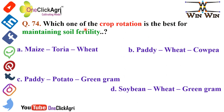Question 74: Which crop rotation is best for maintaining soil fertility? The right answer is soybean–wheat–green gram.